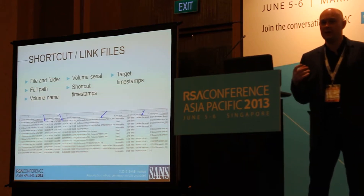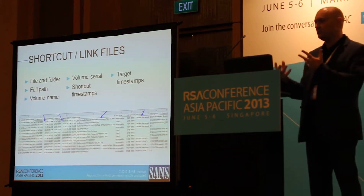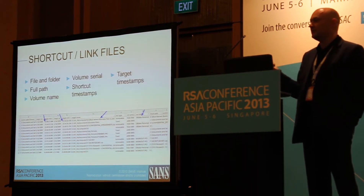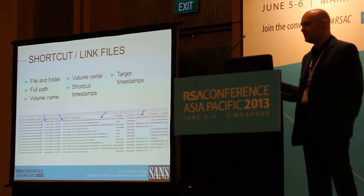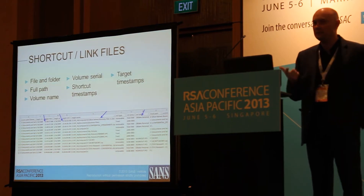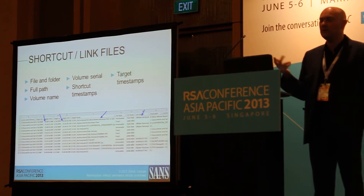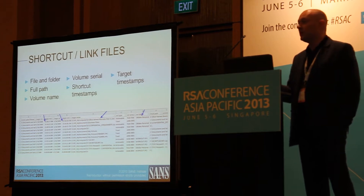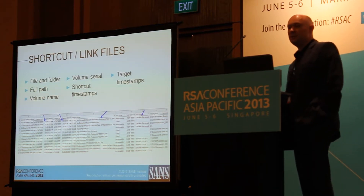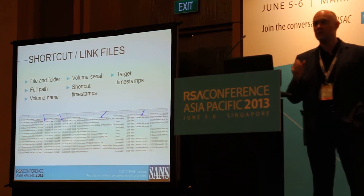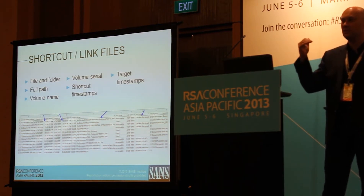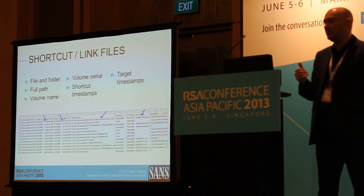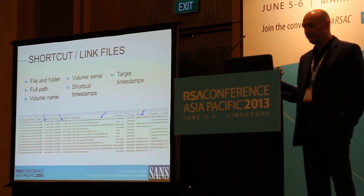If we take those shortcut files and parse them with forensic tools, we can get information such as the file that was accessed, the path it was accessed from, whether that path was local, whether it was a removable drive like a USB device, or whether it was a network path. You can use this to reconstruct people looking at certain network directories and sensitive information.